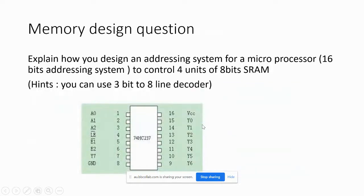Now a design question: explain how you design an addressing system for a microprocessor with 16-bit addressing to control four units of 8-bit SRAM. SRAM is the volatile memory we learned about. The hint given is that you can use a 3-bit to 8-line decoder. This question came up in an exam a few years ago.